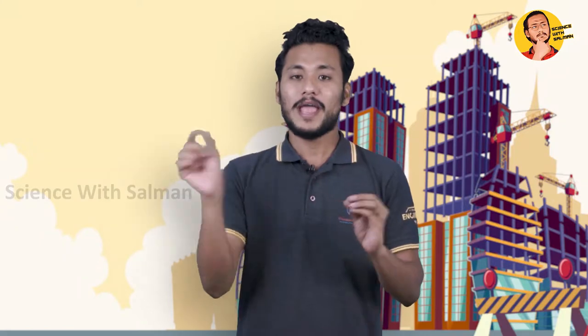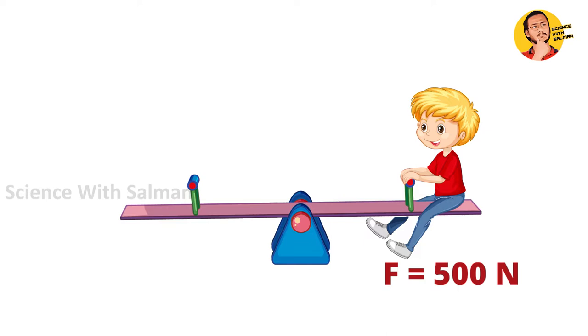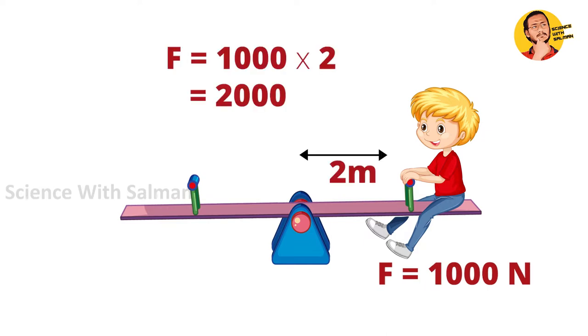Now let's calculate the distance and weight on the right side. The right side lever has 1000 N·m of moment to balance. If you have 1000 N at a distance of 2 meters on the right side, then we have 2000 N·m per meter.